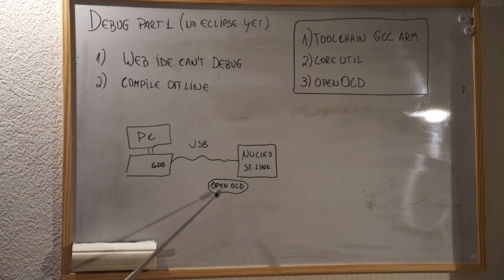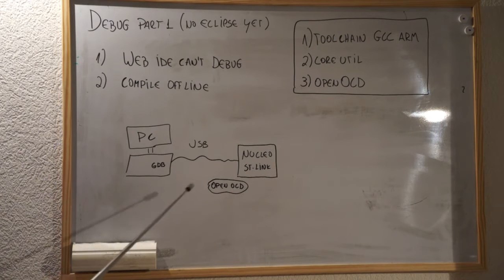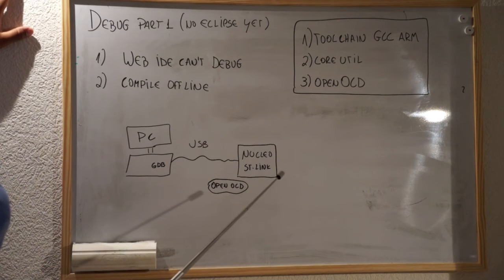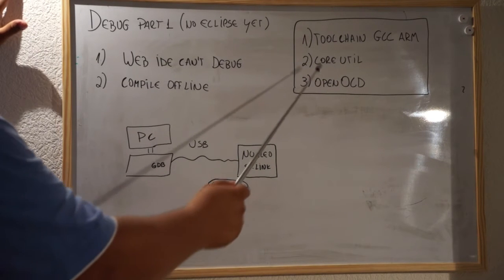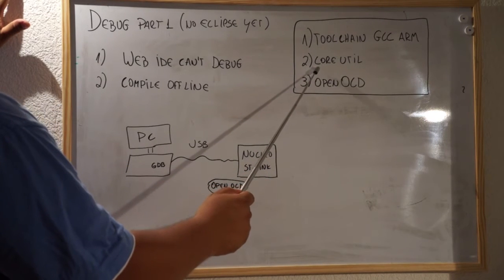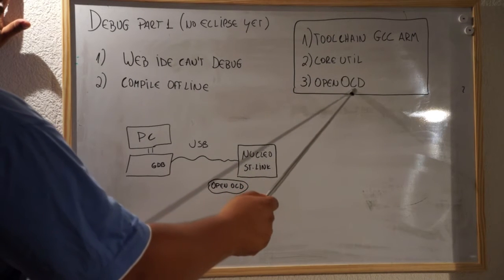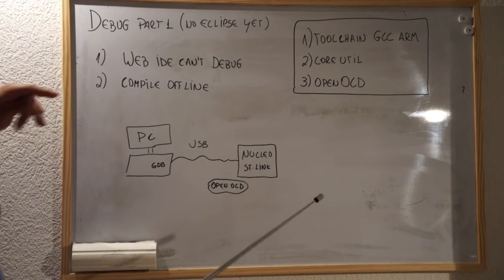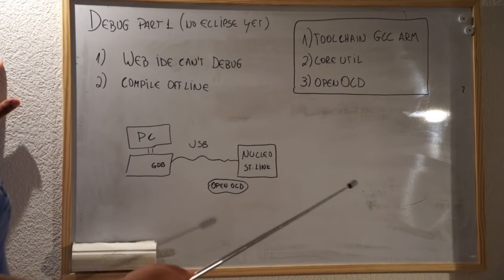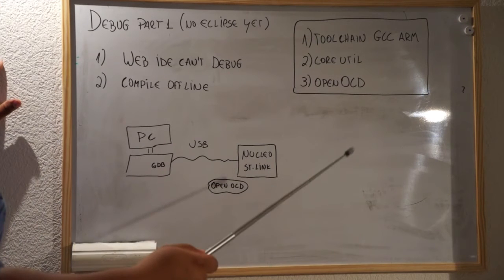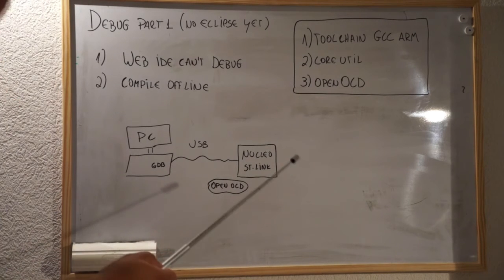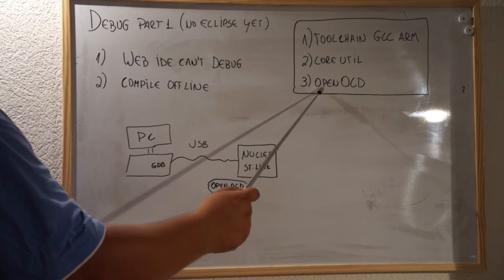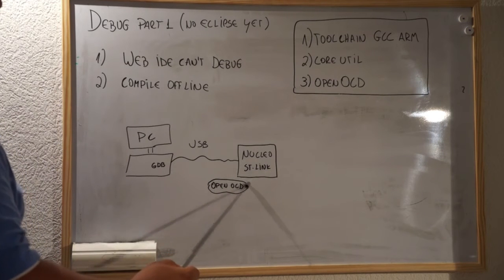OpenOCD will create what we call a GDB server, that is going to receive commands from the GDB client on your computer. In order to prepare your PC, these are the tools that you need to install — at least in the case of Windows. We need to install the GCC ARM toolchain, a program called CoreUtils, and OpenOCD. The toolchain is a set of programs you use to compile and debug. CoreUtils will provide Unix commands like make, rm, and sh. And OpenOCD is the bridge between your board with the ST-Link interface and GDB.